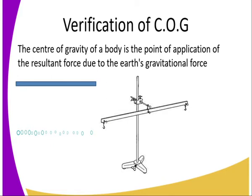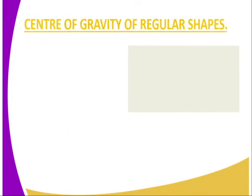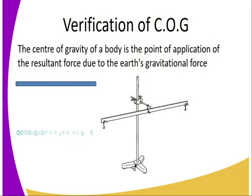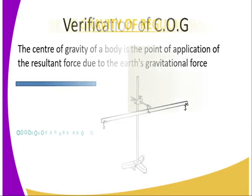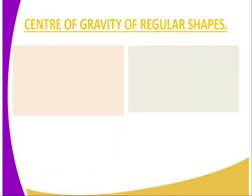The center of gravity of a body is the point of application of the resultant force due to the earth's gravitational force. We can represent this resultant force with a downward arrow acting at that point. From this illustration, the center of gravity is the point of application of the resultant gravitational force on the body.